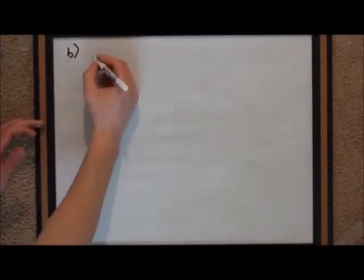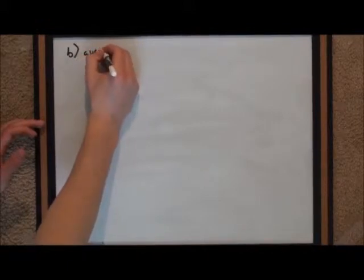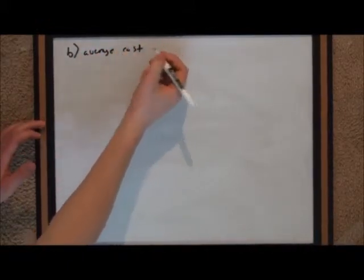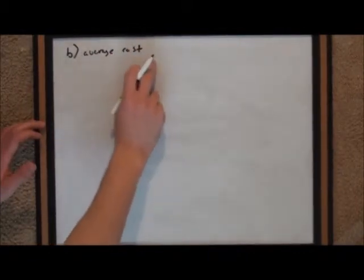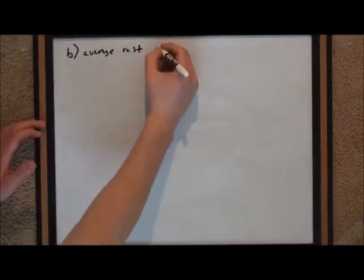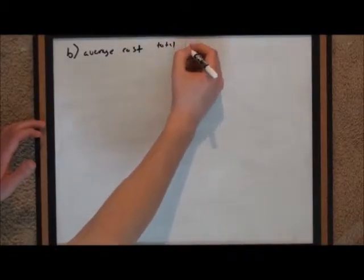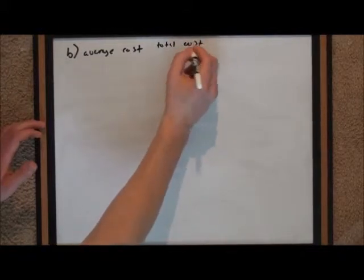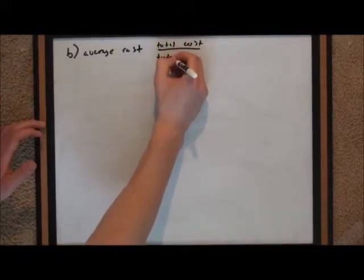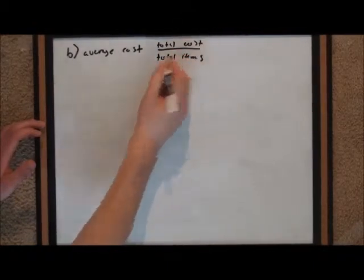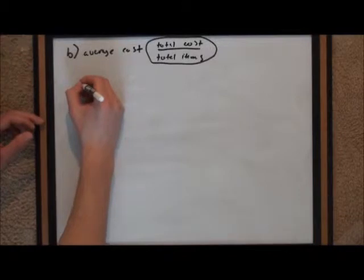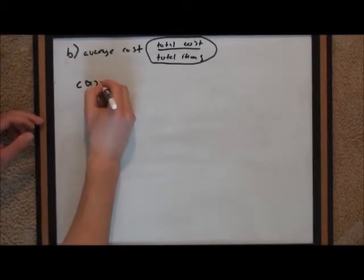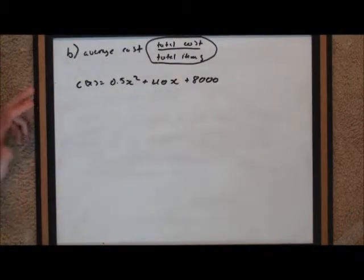For Part B, we're finding the average cost of 5,000 items. Average cost is just the total cost divided by the total number of items produced. Our equation is C(x) equals 0.5x squared plus 40x plus 8,000.